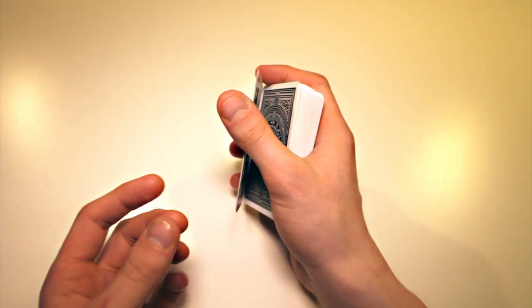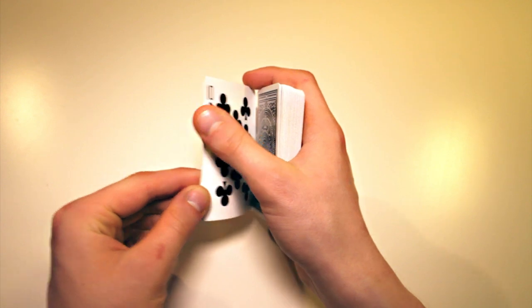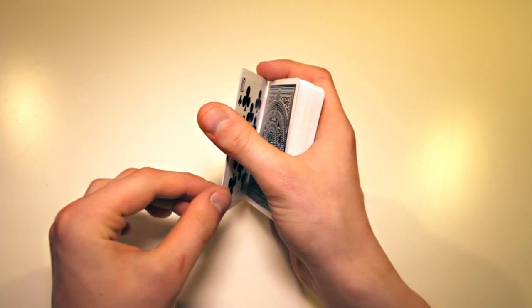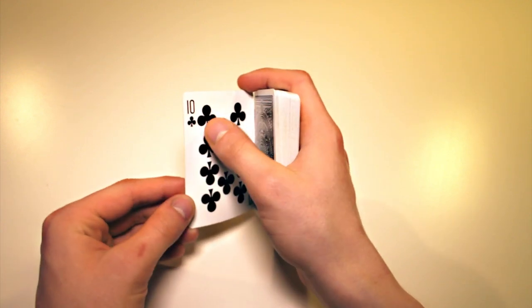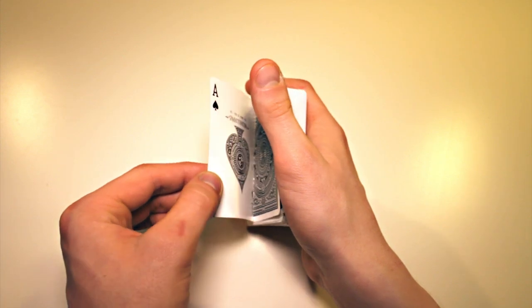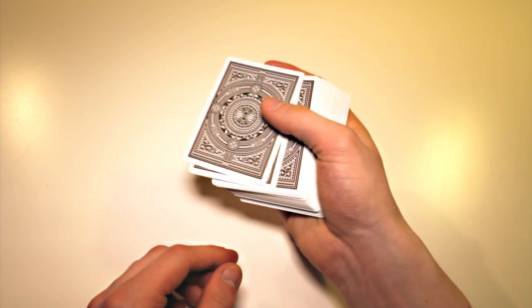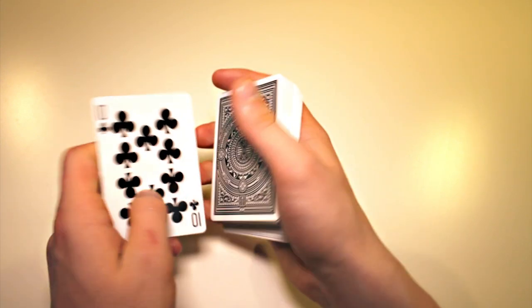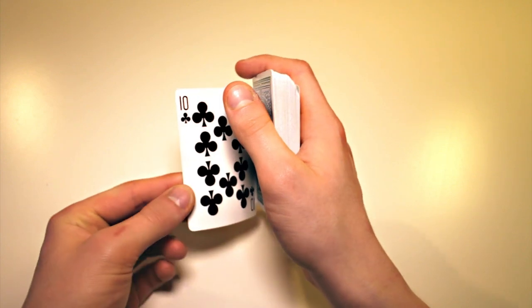You need to find the grip which works best for your hands. Once you are holding it like this, your thumb is going to be close to the corner, because it is going to be dropping one card in a moment. So, once again, you do the double lift, and you are in this position.